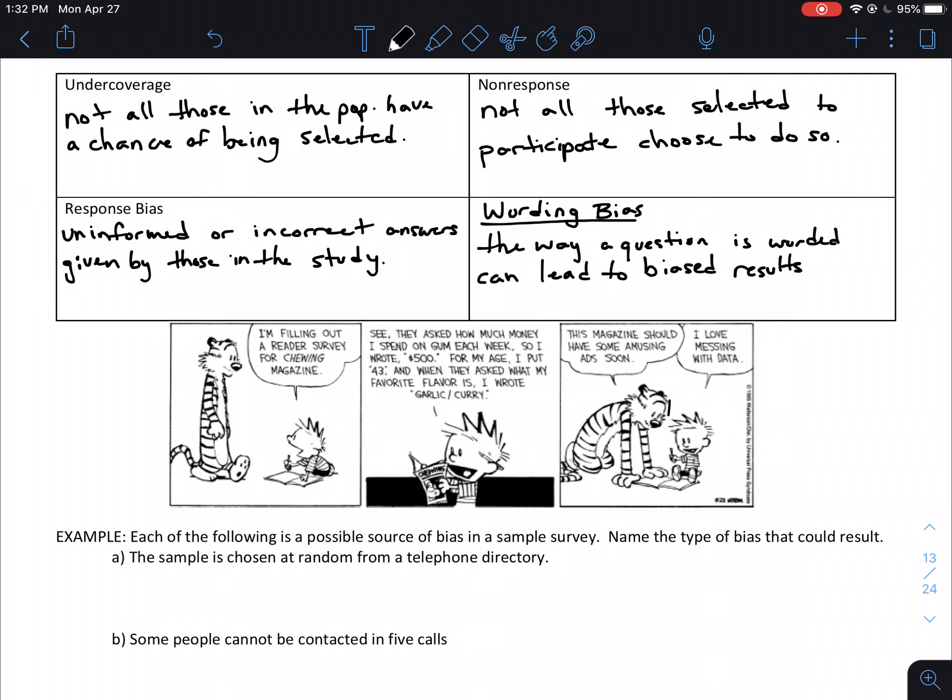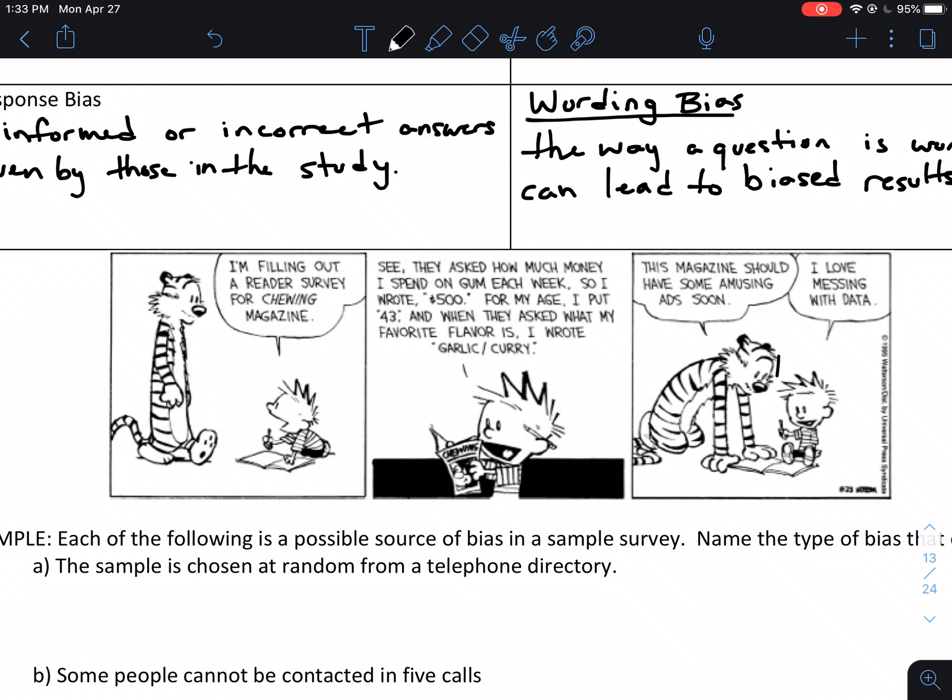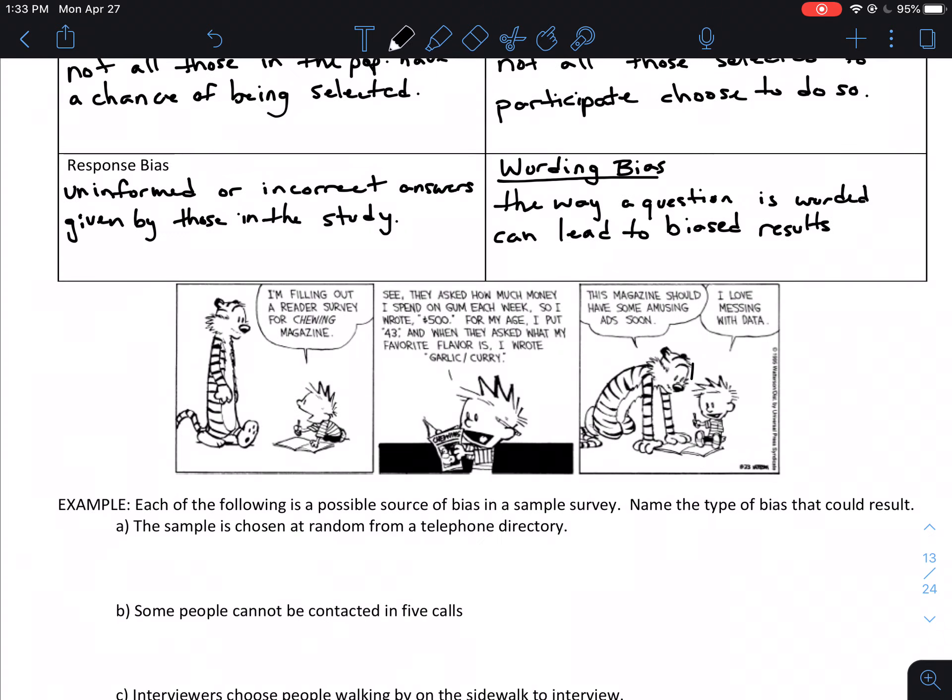So that being said, let's kind of take a look at some examples here. I do have a cartoon to show to you guys that kind of illustrates especially response bias. So it says, I'm filling out a reader's survey for Chewing Magazine. They ask how much money I spend on gum each week. So I wrote $500. For my age, I put 43. And when they asked what my favorite flavor was, I wrote garlic and curry. So obviously, they're getting some responses, but probably not the responses they expected based on this survey. So then the other character replies, this magazine should have some amusing ads soon. And the boy replies, I love messing with data. So definitely an example of response bias there.